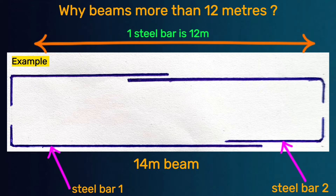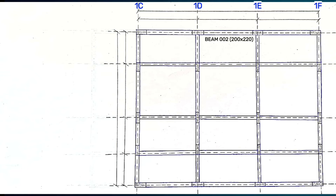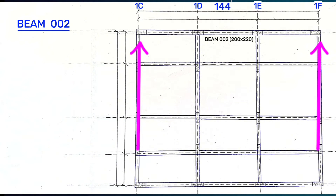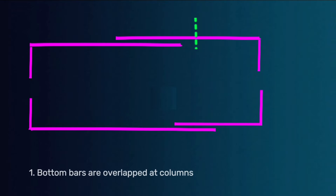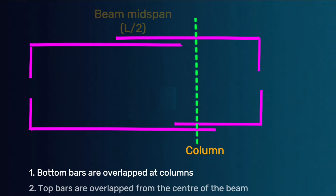Let's look at a practical example of beam 002. Beam 002 starts from gridline 1C to gridline 1F and its total length is 14.4 meters. Since all steel bars are 12 meters, no single bar covers the whole beam — the first bar will be joined with another bar having an overlap plus two development lengths for both top and bottom bars. Bottom bars are overlapped at columns, whereas top bars are overlapped at mid-span of the beam.